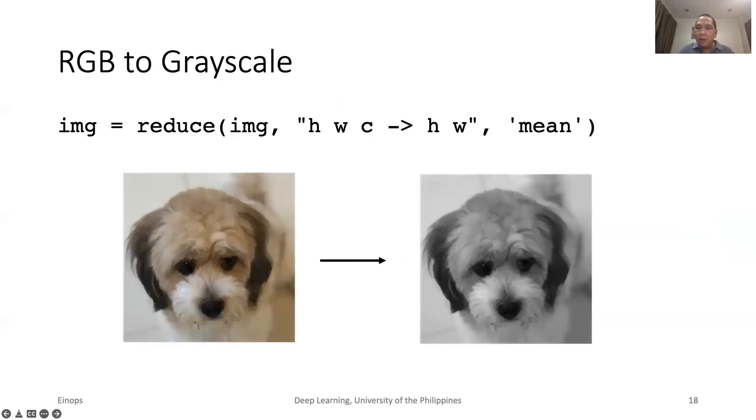In numpy, we show that we can convert an RGB to grayscale by simply taking the mean of the RGB components. The same algorithm can be done using reduce. In this example, we reduce or make the channel axis disappear by taking the mean of its components and then reducing the dimension by 1.